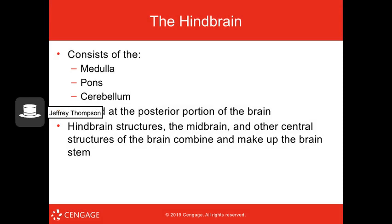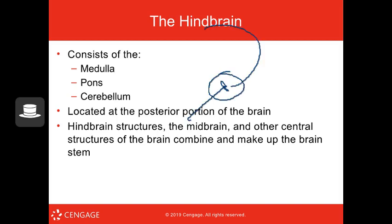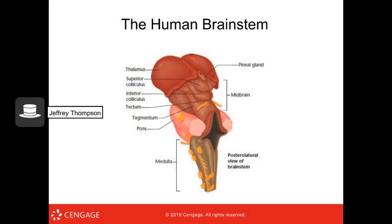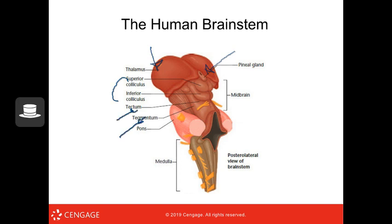The hindbrain consists of the medulla, pons, and cerebellum — it's at the posterior end of the brain. The midbrain and central structures of the brain make up the brain stem. Here's a diagram showing the pineal gland, thalamus, colliculi, tectum, tegmentum, pons, and medulla oblongata, with the spine continuing below.